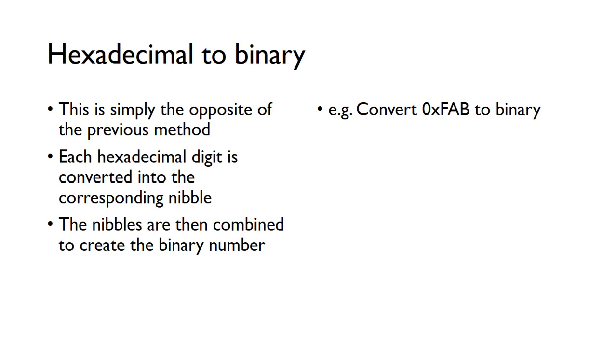Hex to binary is obviously the opposite of that previous method, so now we've got a hexadecimal digit, and we can just convert that into its binary nibble. So F, so we know F is 1, 1, 1, 1, and then A is a 10, so 10 in binary, we need an 8 and a 2.